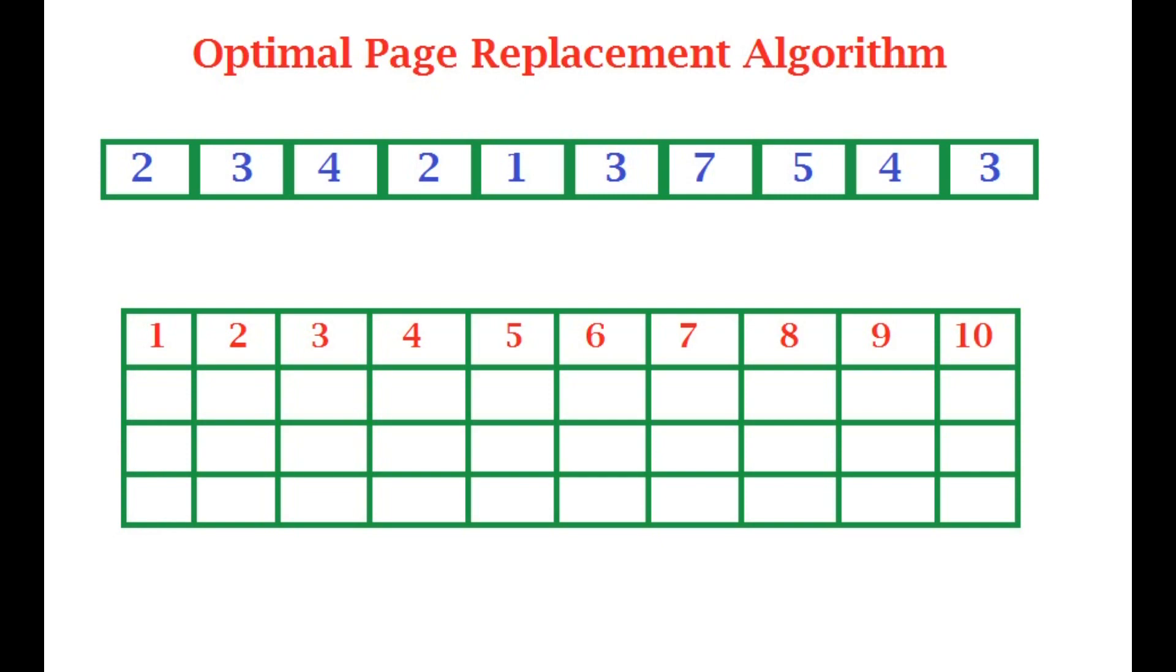Alright, so optimal page replacement algorithm keeps on checking the whole queue for the page which we don't want to use for the longest period of time. For example, we already have one, two, three in the page frame and we want to input another page four. So out of one, two, three, it will check which page will not be used for the longest period of time. Supposingly at the end of the queue we have two, and one and three are after four supposedly. So then two will be removed because it will not be used for the longest period of time.